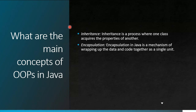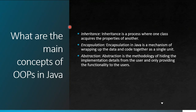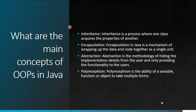A common counter question is: how do we achieve encapsulation? By using private variables and public setters and getters. Abstraction is a methodology of hiding implementation details from the user and only providing the functionality — hiding complex logic from the end user. Polymorphism is the ability of a variable, function, or object to take multiple forms; the same method acts differently depending on the object it is called on.